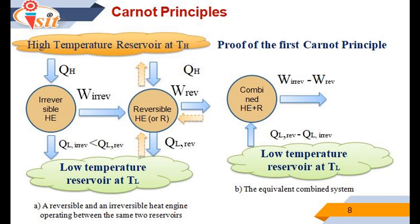The second Carnot principle can also be proved in a similar manner. Replace the irreversible engine with another reversible engine that is more efficient and delivers more work than the first reversible engine. Following through the same reasoning, we end up with an engine that produces net work while exchanging heat with a single reservoir — a violation of the second law. Therefore, no reversible heat engine can be more efficient than another reversible one operating between the same reservoirs, regardless of how the cycle is completed or what kind of working fluid is used.